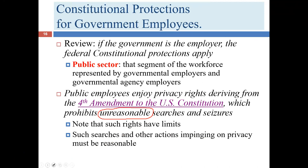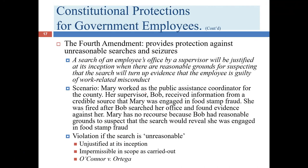Here's an example: a search of an employee's office by a supervisor — remember, we're talking about a federal government employee — will be justified at its inception when there were reasonable grounds for suspecting the search would turn up evidence that the employee is guilty of work-related misconduct. They don't have to have the smoking gun already — that would become a catch-22. You don't need strong evidence before getting a search warrant; you just need credible evidence that misconduct may possibly be occurring.